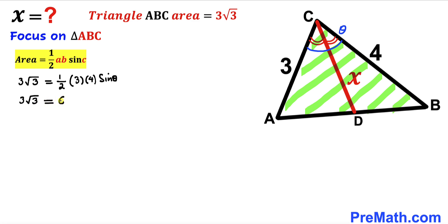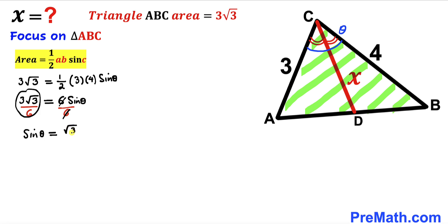Let's divide both sides by 6 to isolate sine of theta. The 6s cancel, so sine of theta equals square root of 3 divided by 2.